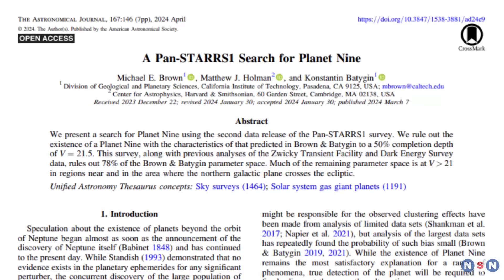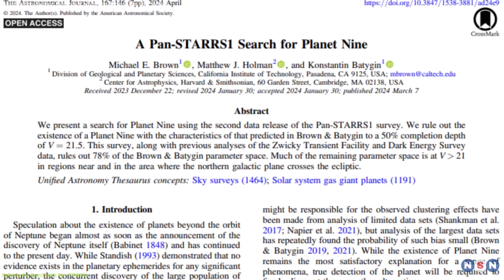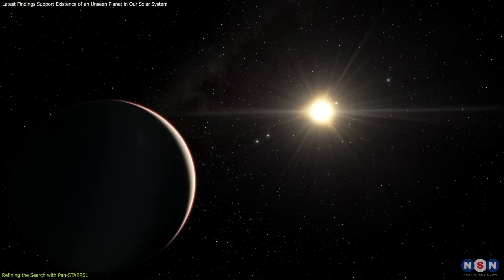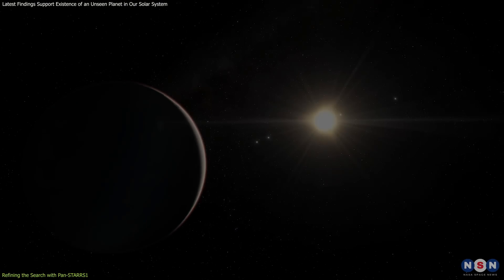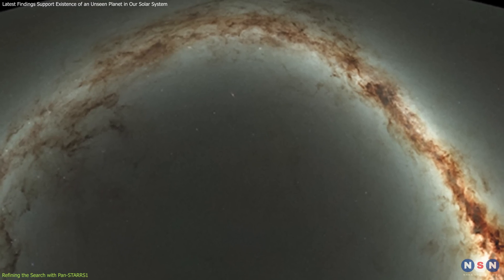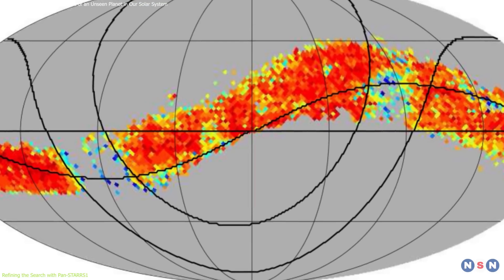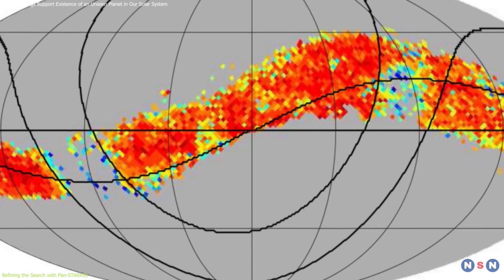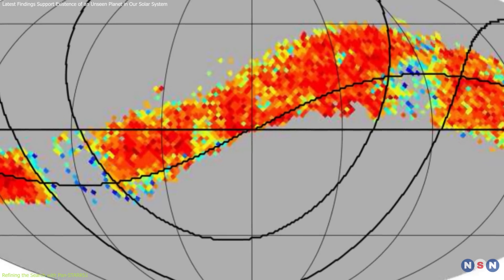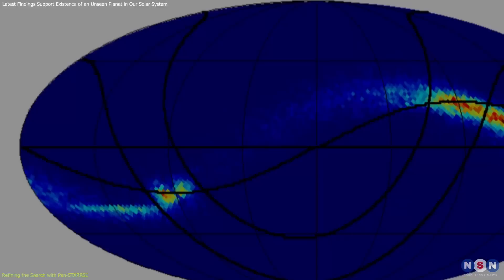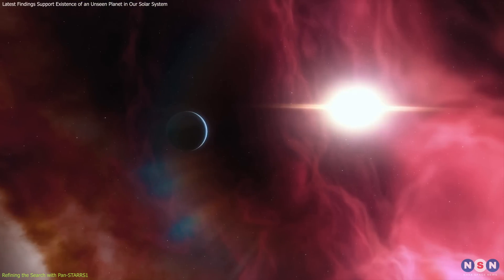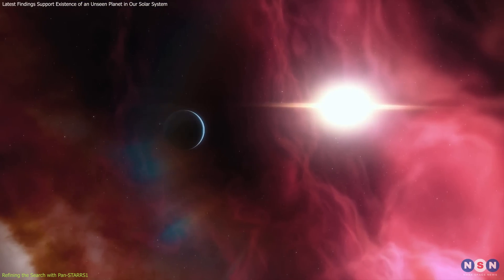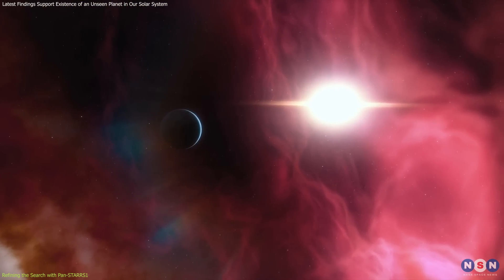The recent study titled A Pan-STARRS-1 Search for Planet 9 represents a significant milestone in the ongoing search for this hypothetical planet. By leveraging data from this survey, astronomers have made considerable progress in narrowing down the potential locations where Planet 9 could reside. One of the key outcomes of this research is the elimination of 78% of the sky area originally thought to potentially harbor this elusive planet, based on earlier models and predictions.